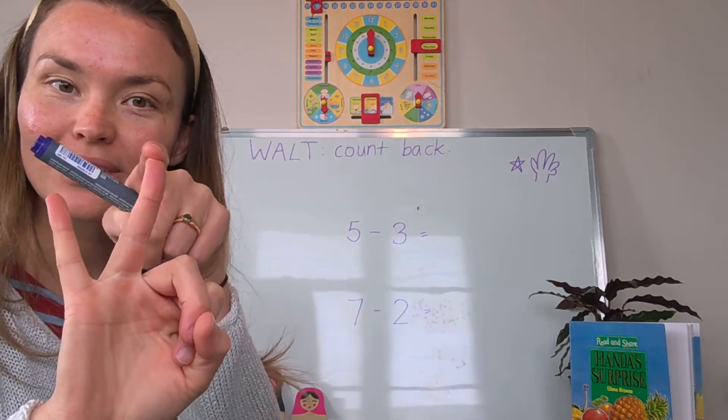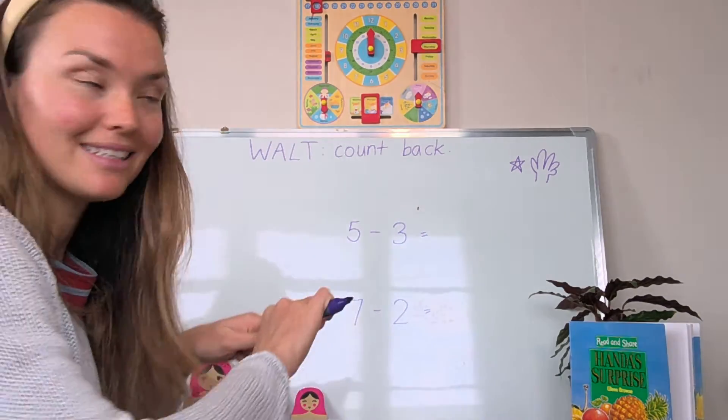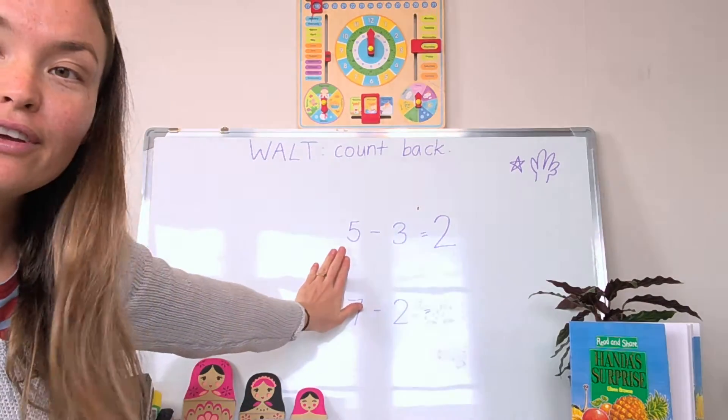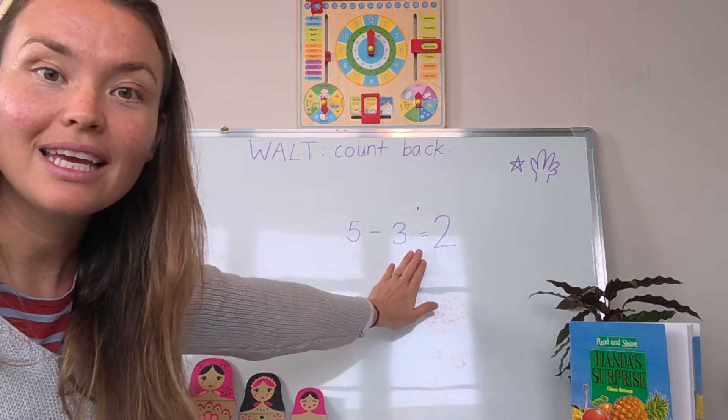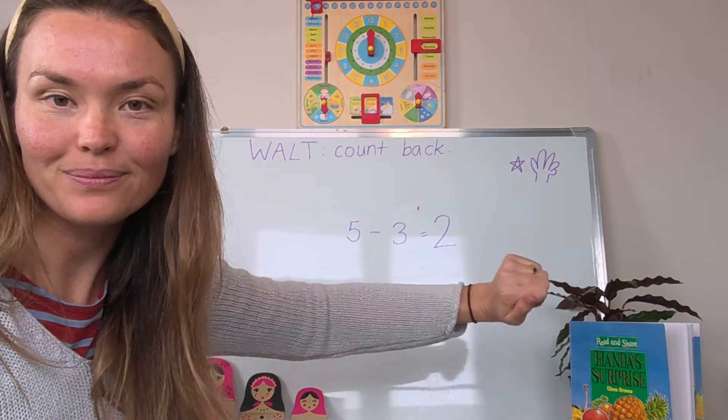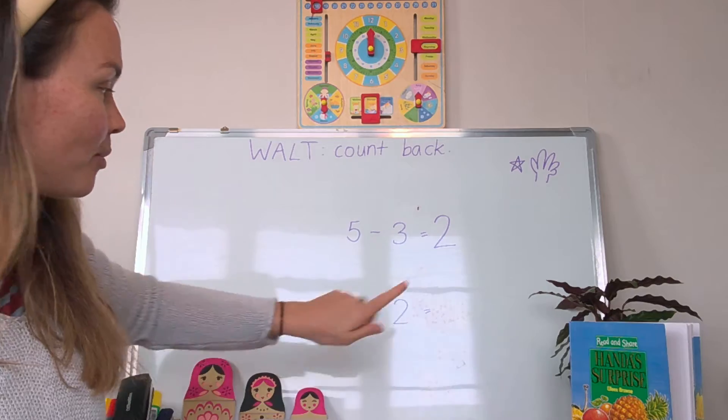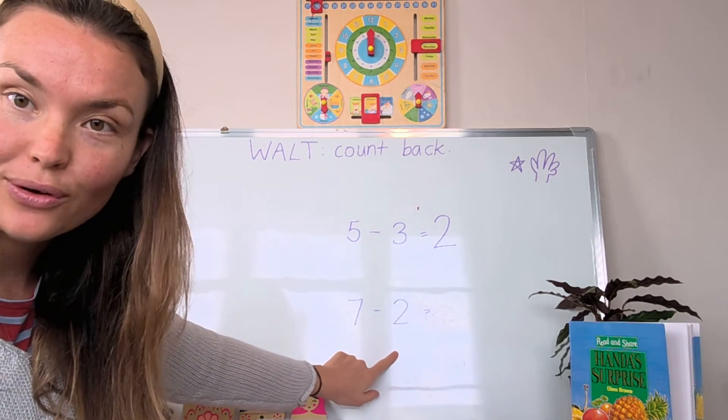One, two. Let's write that in our number sentence. So five take away three equals two. Let's try a slightly larger question. This problem says seven take away two.